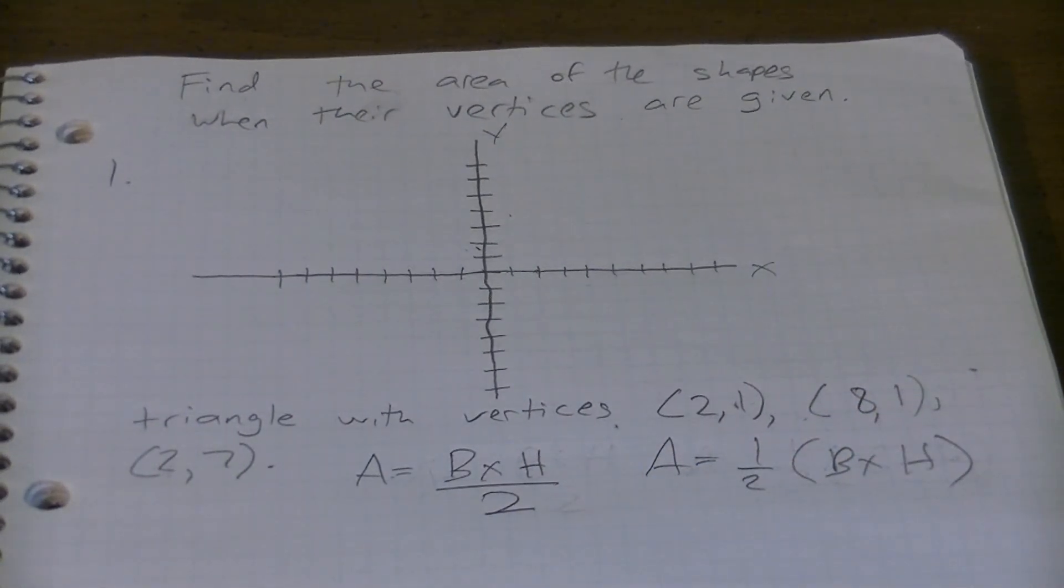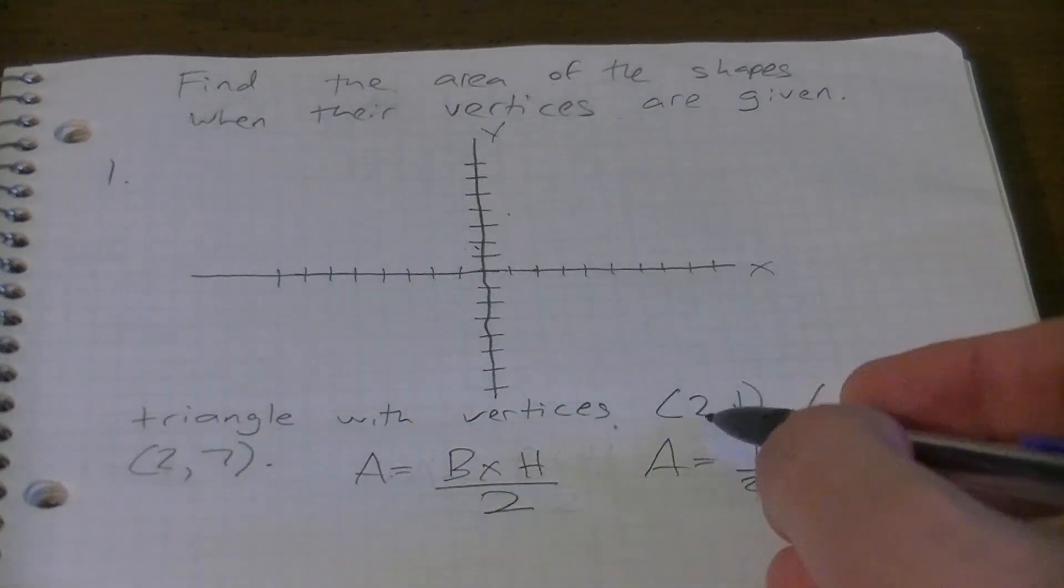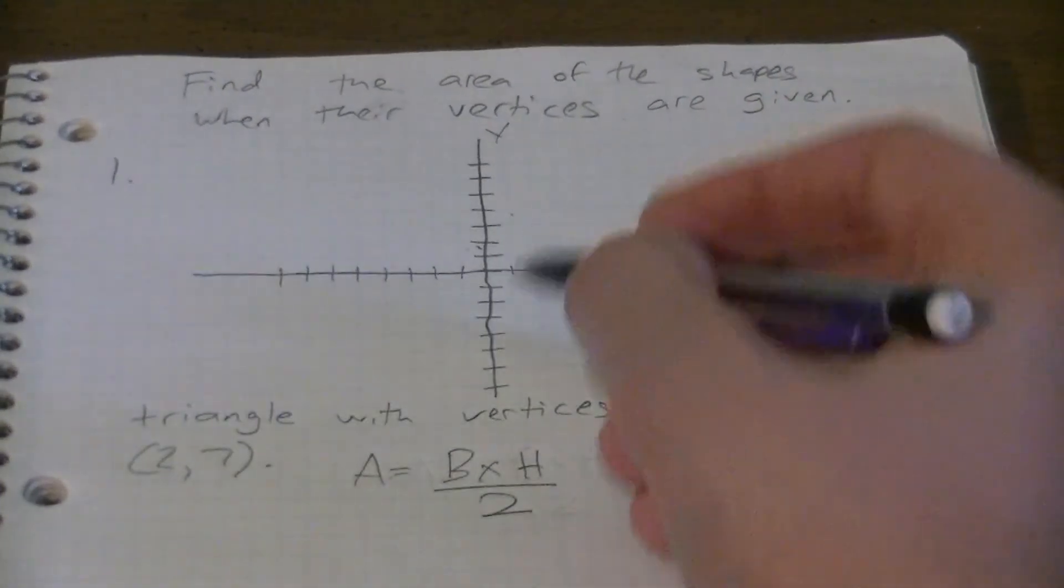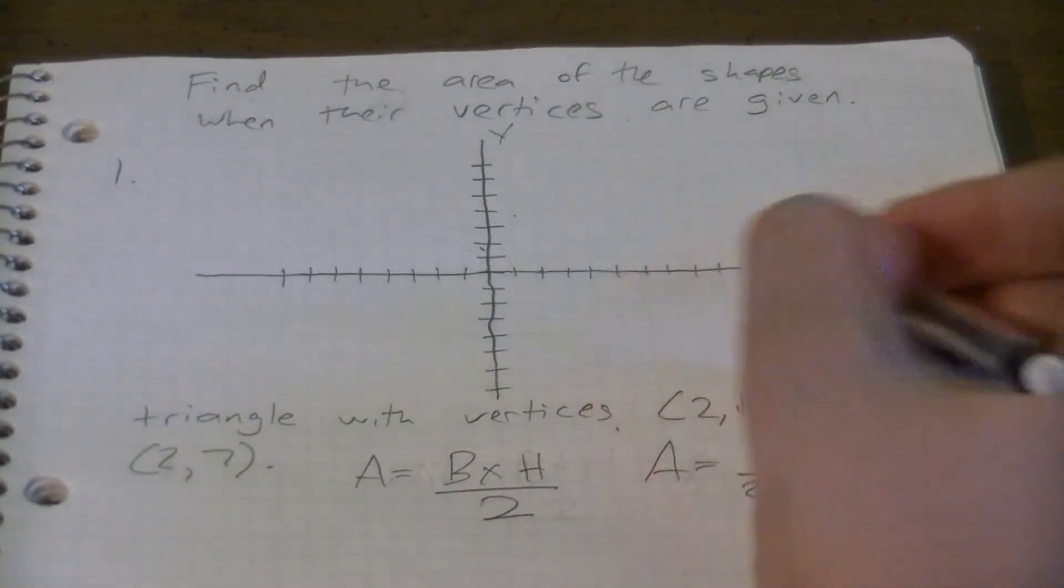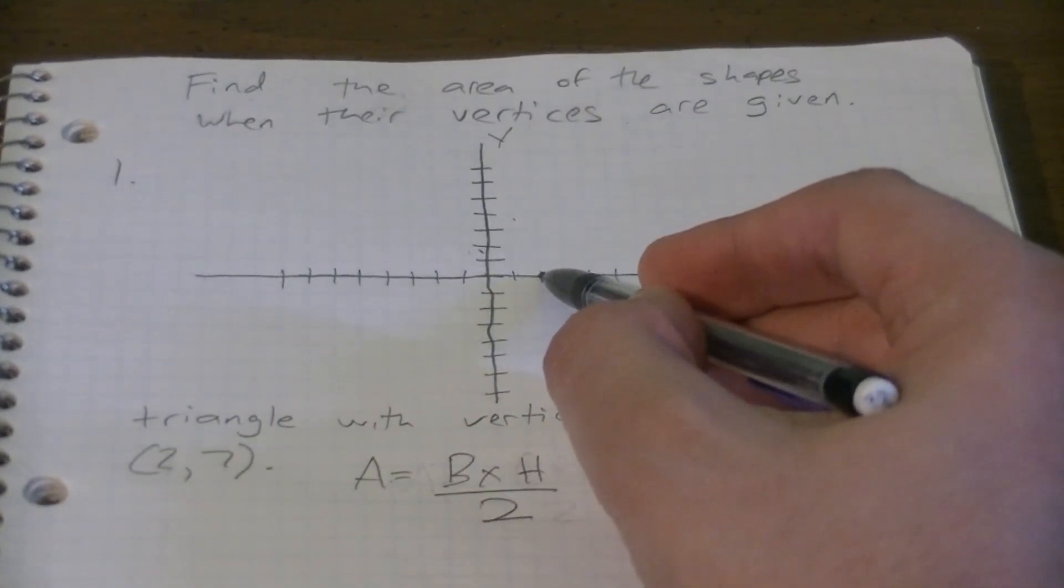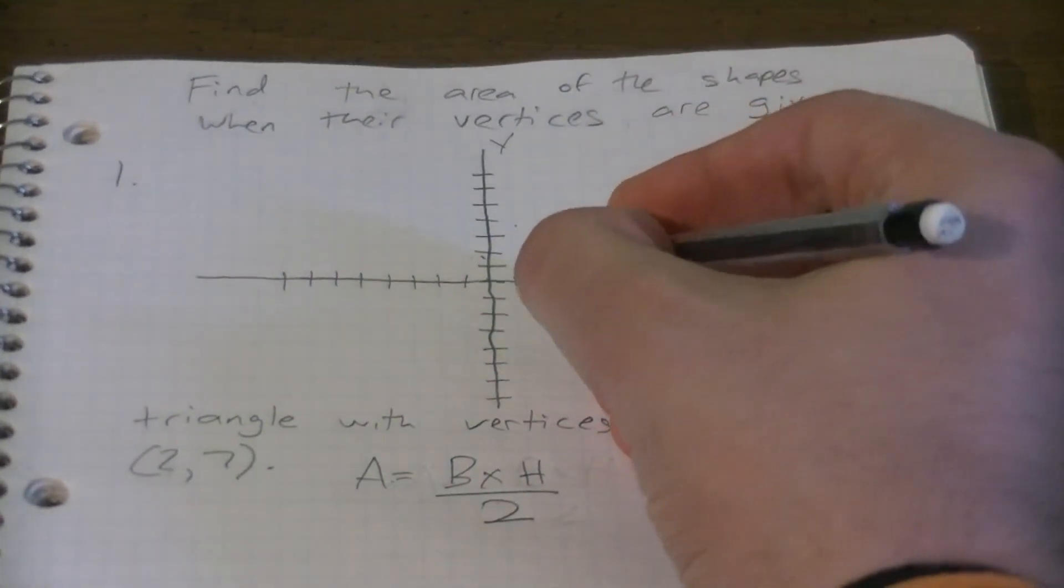So let's do this. (2,1) - how do we plot (2,1)? Just in case for people who don't know. Since it's a positive number, we're moving over to the right two. So we start on zero, one, two. Now we wouldn't plot it there because that would be (2,0). For (2,1) we go up one, so our first point is right here. Our first vertice.